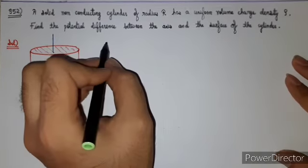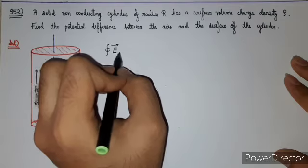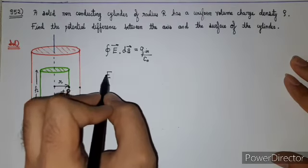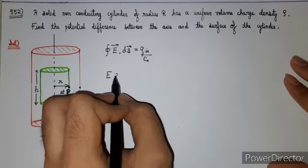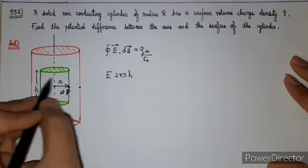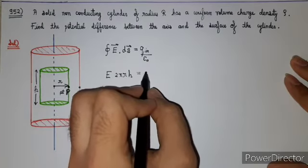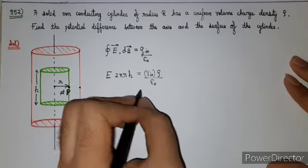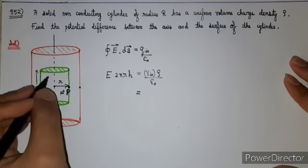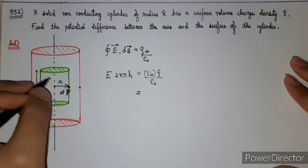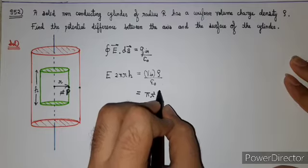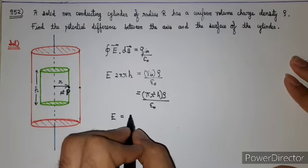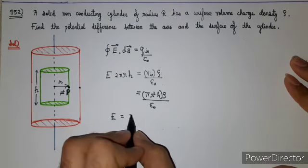Applying Gauss's law for this Gaussian surface: the integral of E dot dS equals Q inside divided by epsilon not. Solving this integral gives E into 2 pi r h, which is the curved surface area of the cylinder, equal to Q inside divided by epsilon not. Q inside equals the volume enclosed by the Gaussian surface times the volume charge density rho. The volume is pi r squared h, so the electric field inside at distance r from the axis comes out to be rho r divided by 2 epsilon not.